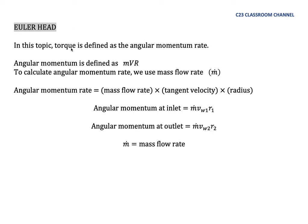In this topic, torque is defined as the angular momentum rate. Normally angular momentum is defined as M, V, and R. To calculate angular momentum rate, we use mass flow rate M dot instead of mass only. So to calculate the angular momentum rate, we are multiplying mass flow rate times tangent velocity and times radius.